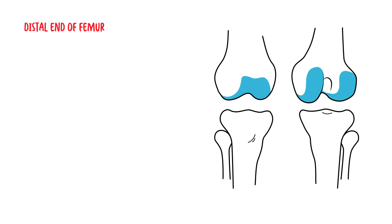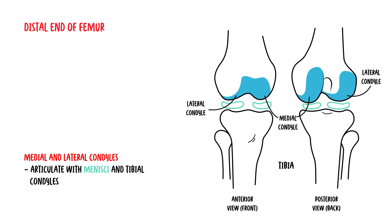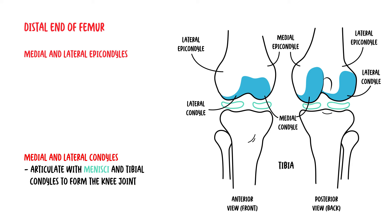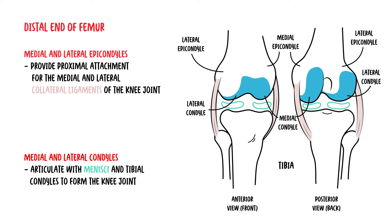At the distal end of the femur, you find the medial and lateral condyles. The femoral condyles articulate with the menisci — which is cartilage — and the tibial condyles themselves to form the knee joint. The medial and lateral epicondyles, 'epi' meaning above, provide proximal attachment for the medial and lateral collateral ligaments of the knee joint.